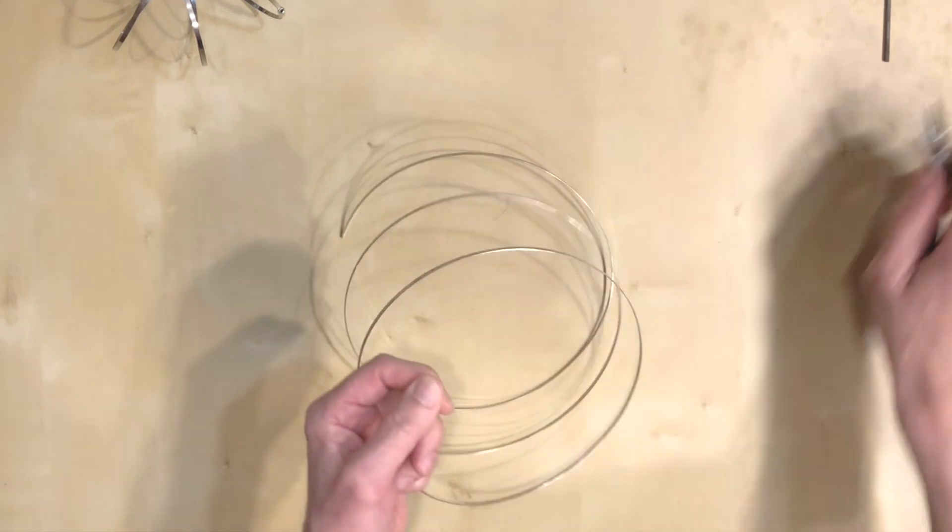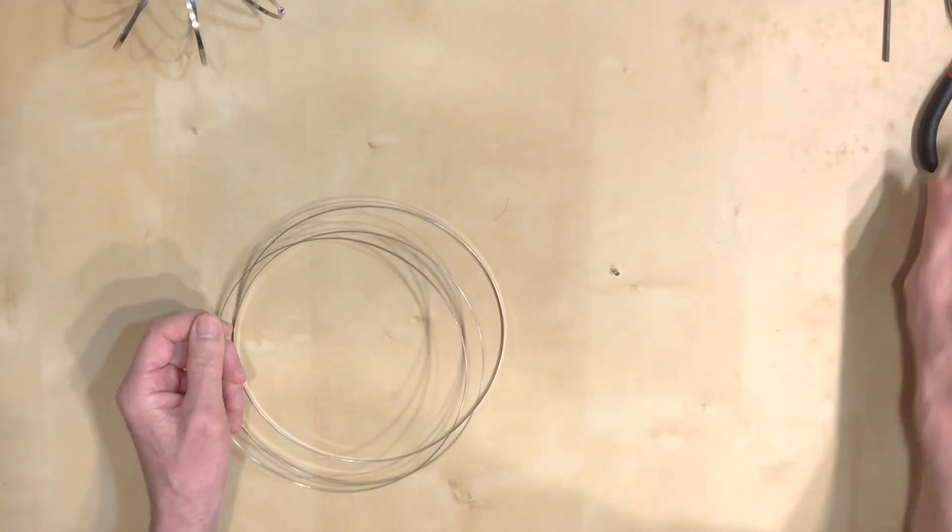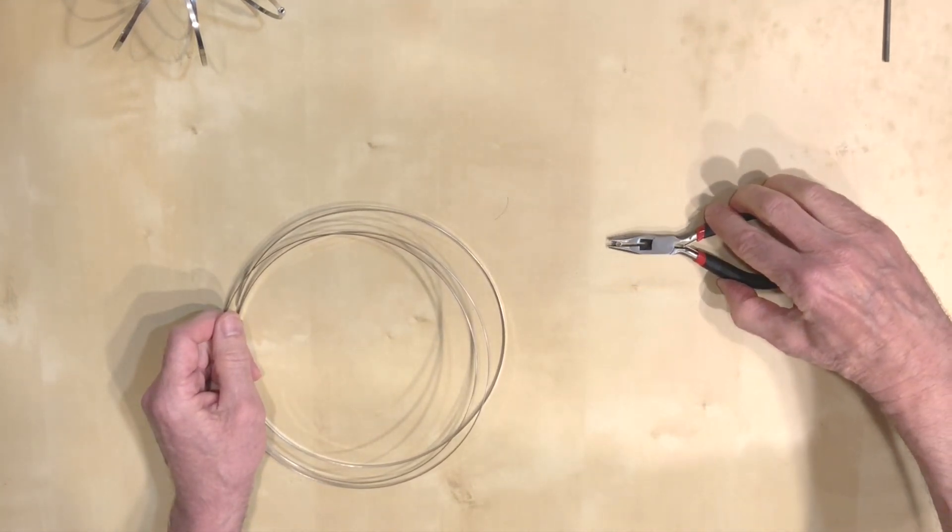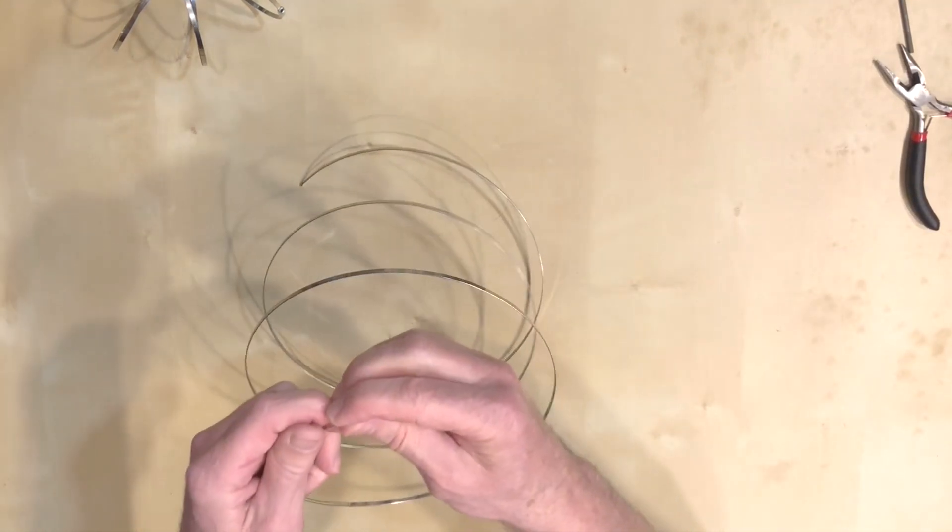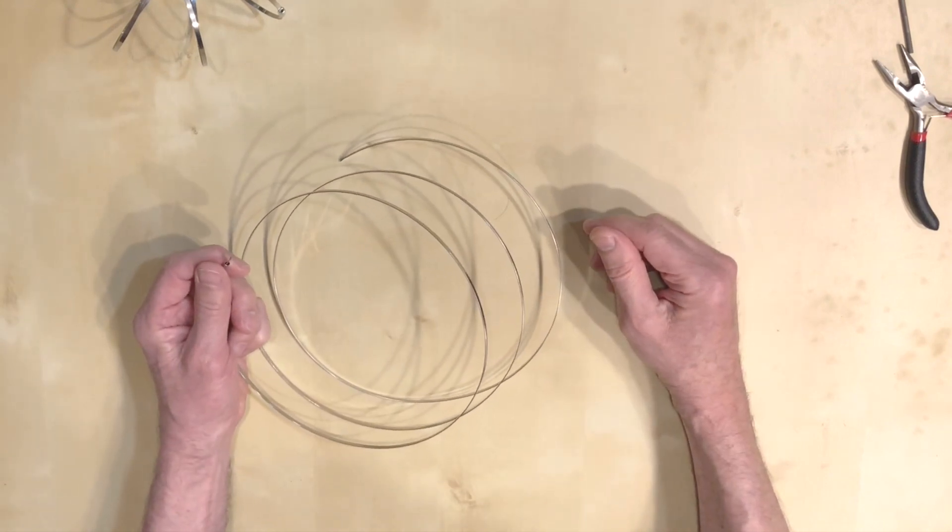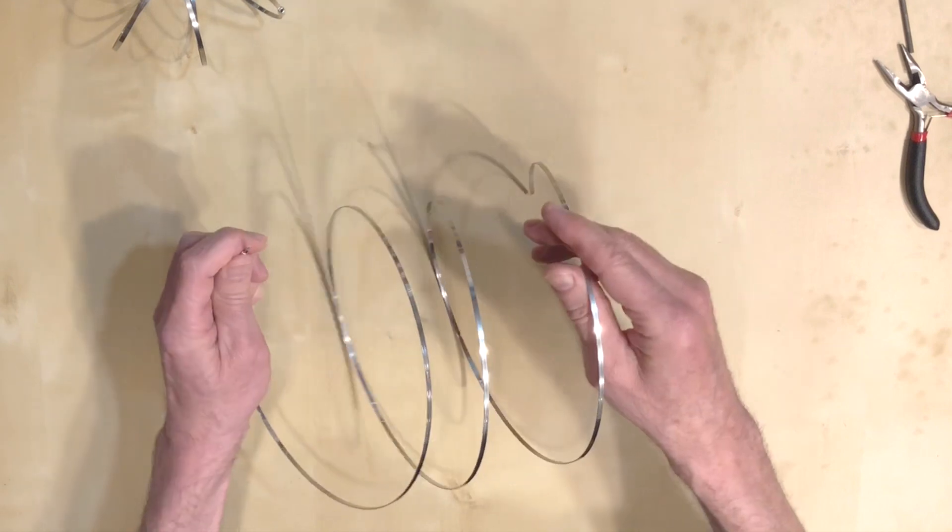To join the wire ends together, I will use a small bead like this. This used to be cylindrical but I flattened it a little bit so it will go nicely over the ends and it will hold the wire ends together when we're done wrapping the knot.